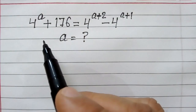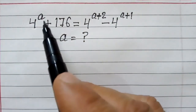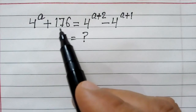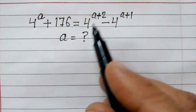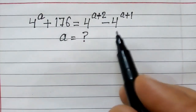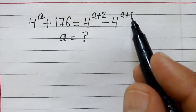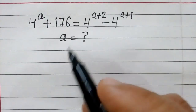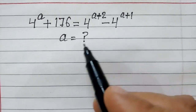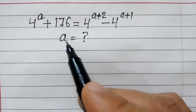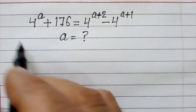Hi friends, we have an exponential equation: 4 to the power a plus 176 is equal to 4 to the power a plus 2, minus 4 to the power a plus 1. We have to solve this equation, or we can say we have to find out the value of a.